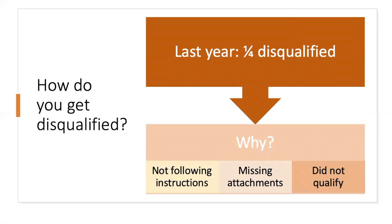Some students who fully completed the application on time did not meet our qualifications. Scholarship qualifications should be clearly posted with the award application. Make sure that you read that, and if you're unsure what the criteria is, contact the provider prior to starting the application — this will save you a lot of time. Each year we receive hundreds of applications and we don't have time to review every single application that does not qualify, so I really encourage you to only apply for scholarships that you are eligible for.